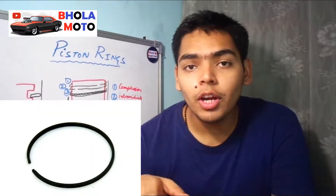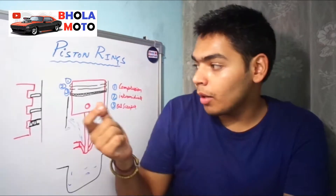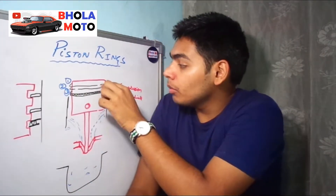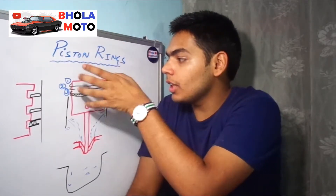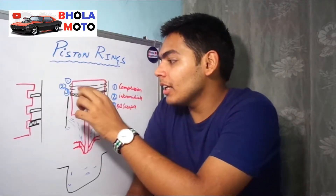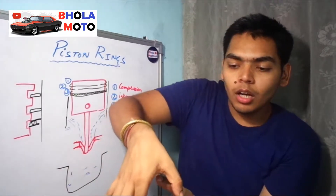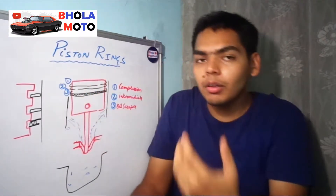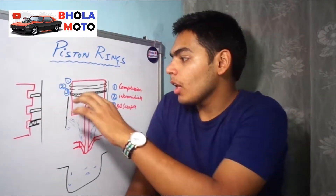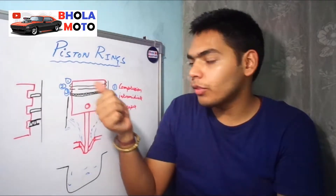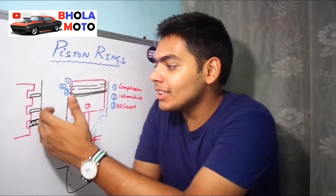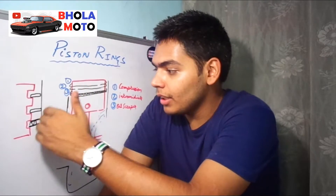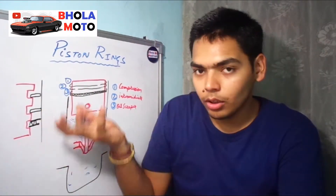Now coming to the second piston ring — the intermediate ring. It prevents the pressure generated above from leaking. There is a cut inside the piston ring, so pressure from the combustion chamber may leak through that gap. However, the rings are positioned so that their cuts do not face each other, which helps prevent leakage. Also, the intermediate ring is slightly softer than the first ring, so it can help scrape any oil left over even after the oil scraper ring has passed.